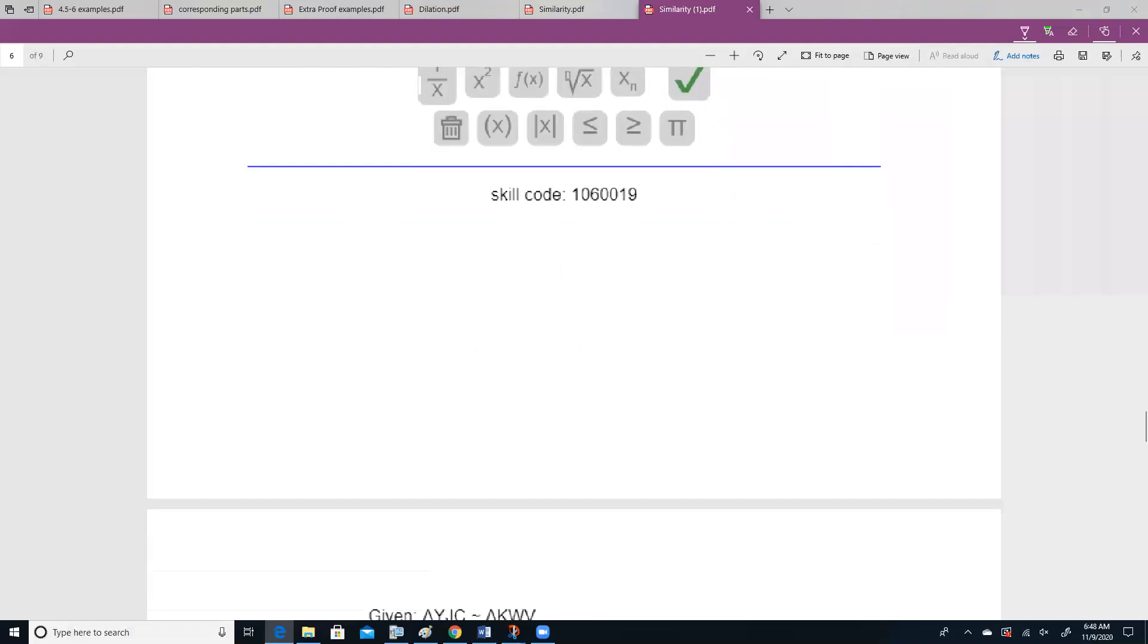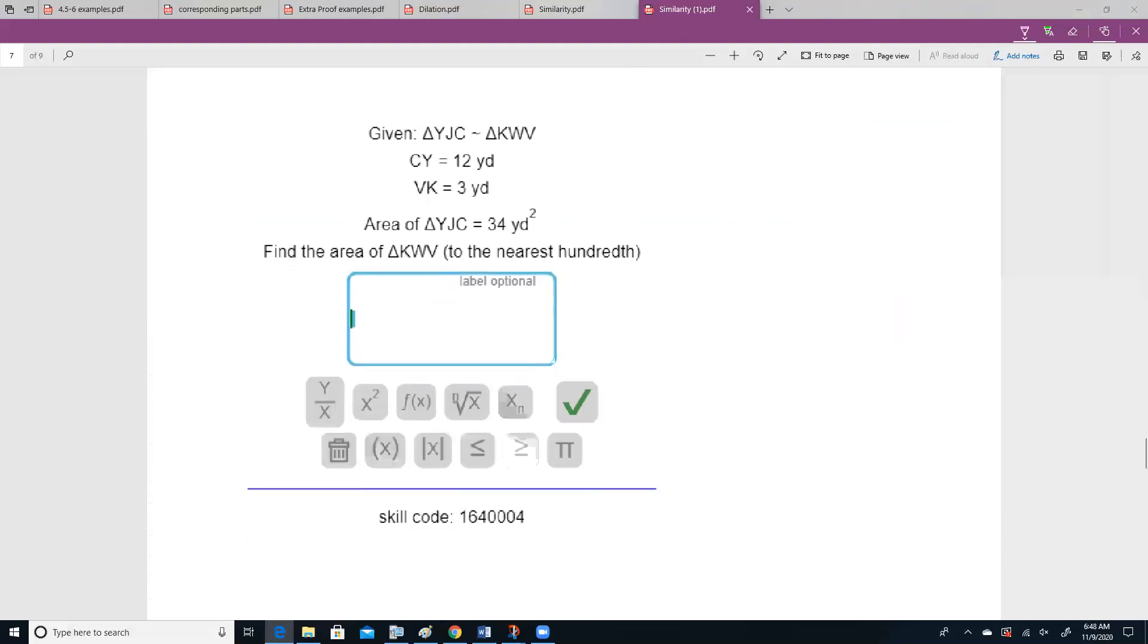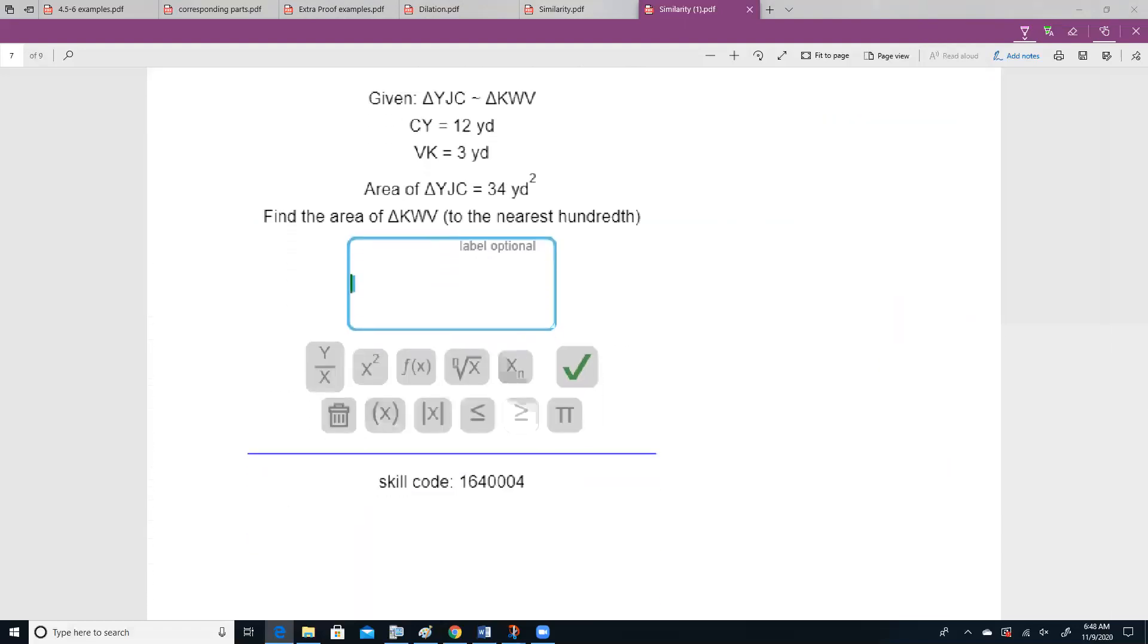Now, let's do something a little bit different. Instead of talking about perimeter, we're going to talk about area. One thing to keep in mind when we're talking about area is that area is the product of the base and the height, which means that we have to incorporate two units, which means that we're going to have our scale factor squared.